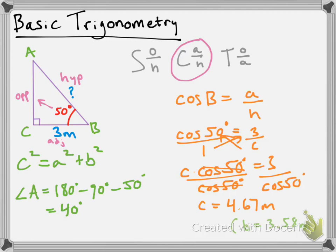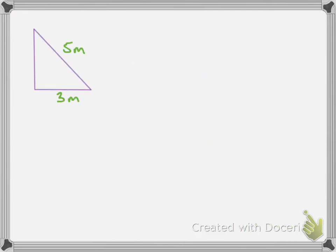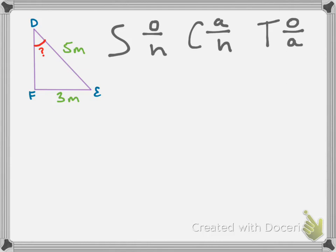Next, let's look at another triangle. I have a right-angled triangle where one side length is 3 meters and the hypotenuse is 5 meters, and we're looking for angle D in triangle DEF. We'll use trigonometry again. The side opposite angle D is 3 meters and the hypotenuse is 5 meters, so we want the ratio using opposite and hypotenuse — that's the sine ratio.